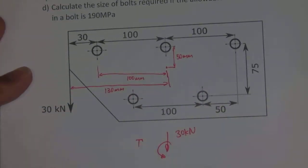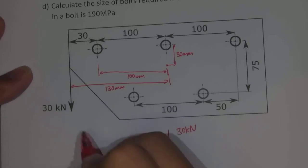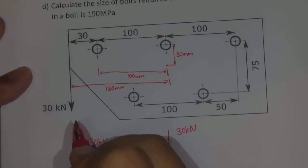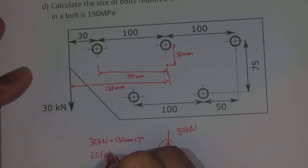And so the amount of torque would be equal to 30 kilonewtons multiplied by 130 millimetres. You can write this as 30 times 10 to the 3 times 130 times 10 to the minus 3 because that's millimetres. There's our torque.